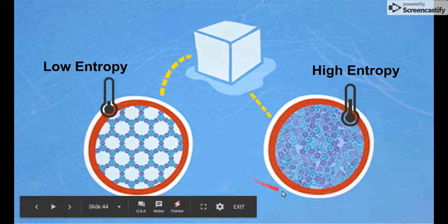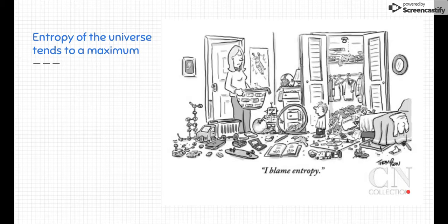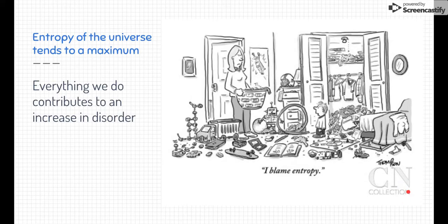There is always a way. There is always a way for entropy to get in there. So that's why it says the entropy of the universe tends to a maximum. Everything we do contributes to an increase in disorder.